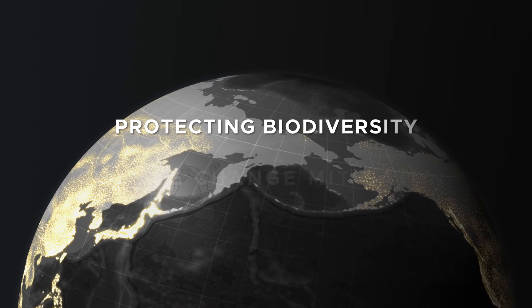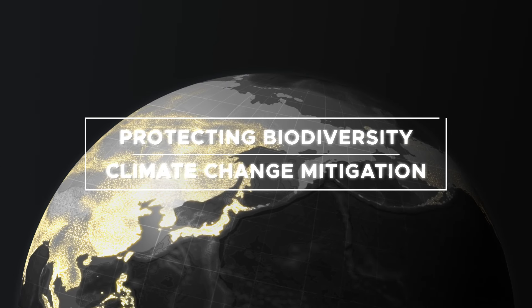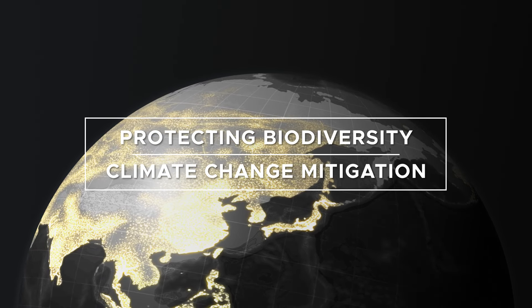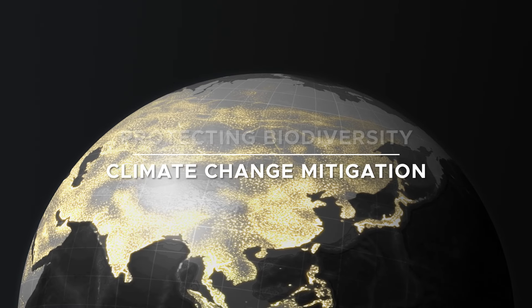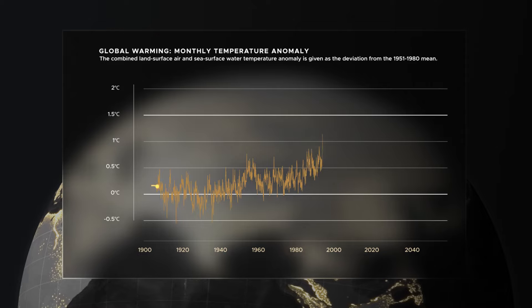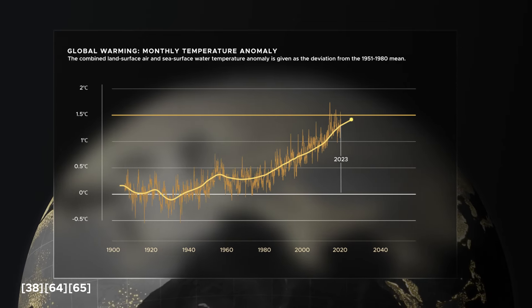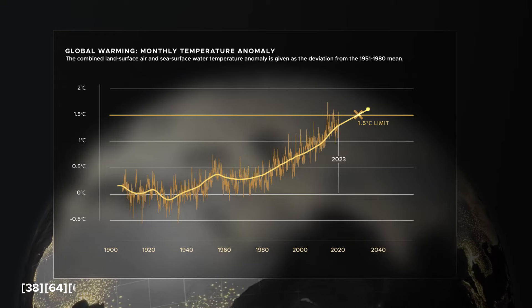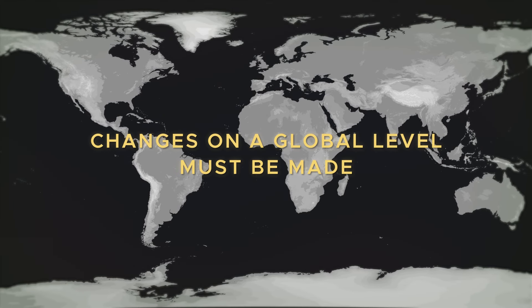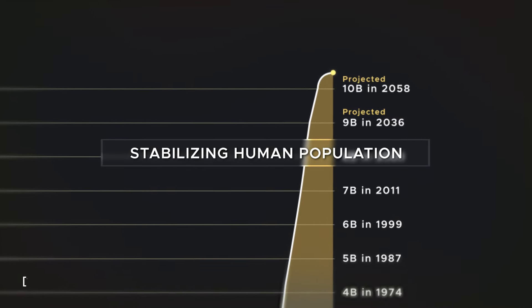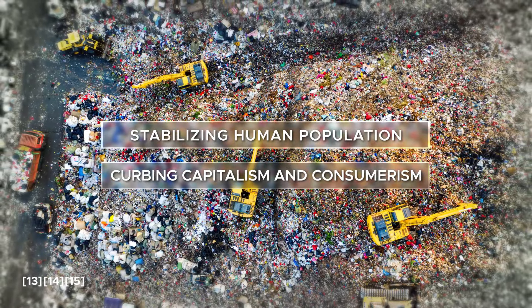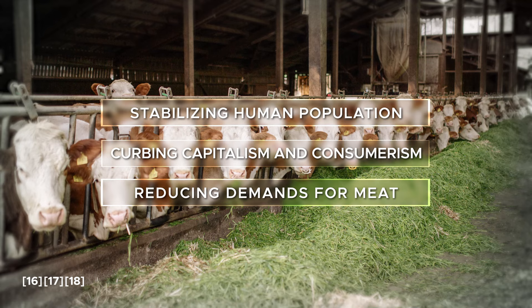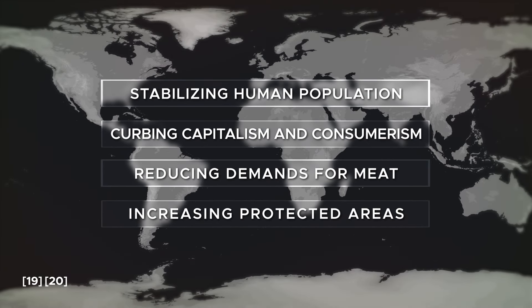Measures to protect biodiversity go hand in hand with climate change mitigation. Both of these problems have similar causes, and climate change affects all life on the planet as a whole. Unless we limit warming to 1.5 degrees Celsius, climate change is likely going to become the dominant cause of biodiversity loss. To address both the climate emergency and avoid biodiversity collapse, changes on a global level must be made. Some key actions include stabilising human population, curbing excess capitalism and consumerism, reducing the demand for meat, and increasing the number and size of terrestrial and marine protected areas.